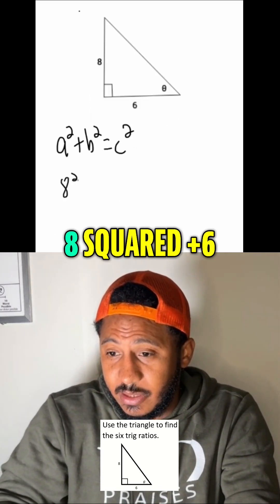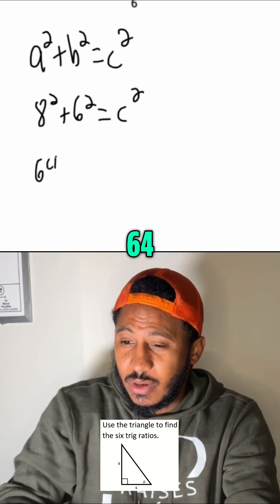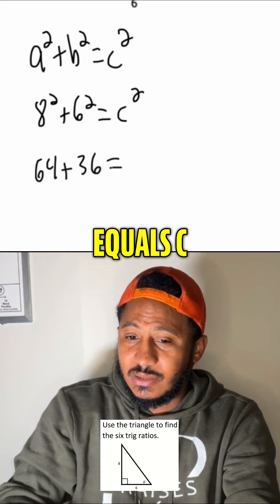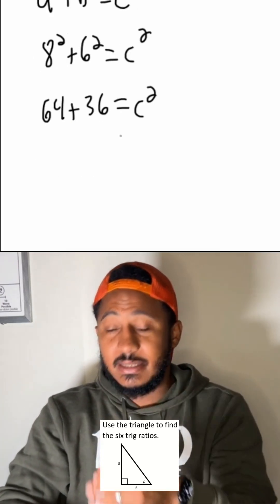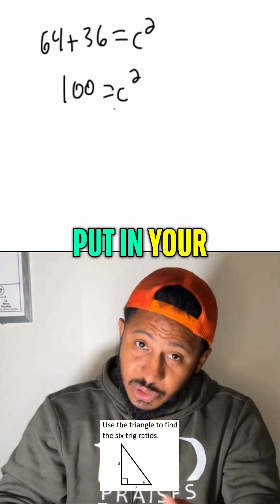So, here we get 8 squared plus 6 squared is C squared. 8 squared is 64. 6 squared is 36 equals C squared. 64 plus 36 is 100 equals C squared. And I'll take the square root.